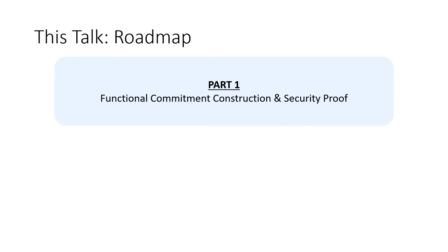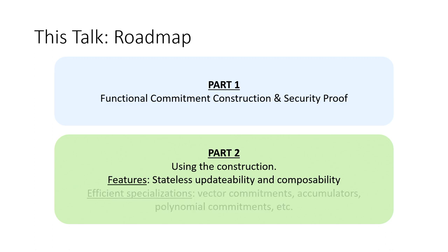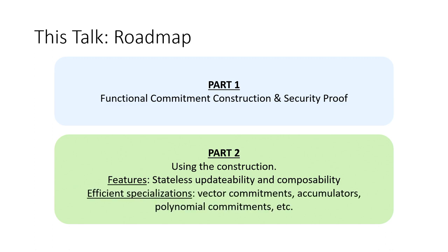This talk is split into two parts: first, we go over the functional commitment construction and a brief sketch of the security proof; second, we talk about how to use this construction, how to take advantage of its more attractive features, and how to efficiently specialize it to common special cases.